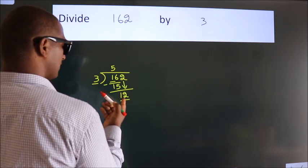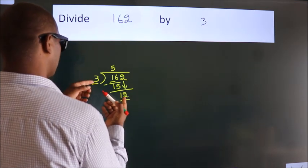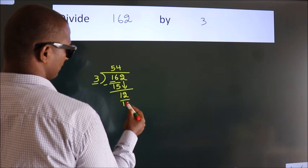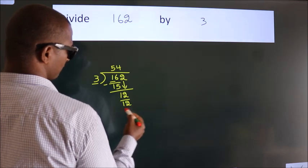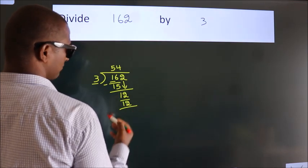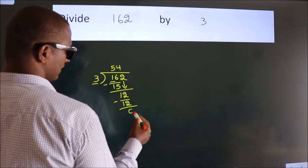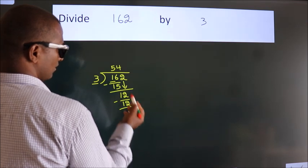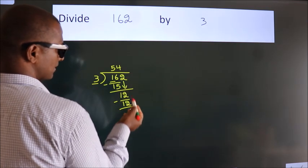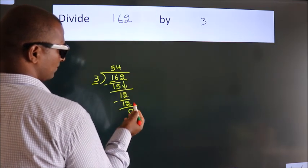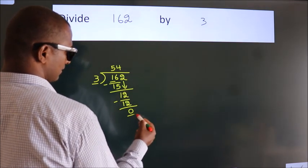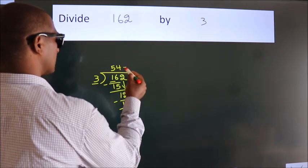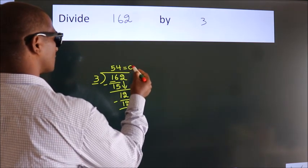When do we get 12 in the 3 times table? 3 fours are 12. Now we subtract and we get 0. After this, there are no more numbers to bring down, so we got remainder 0. This is our quotient.